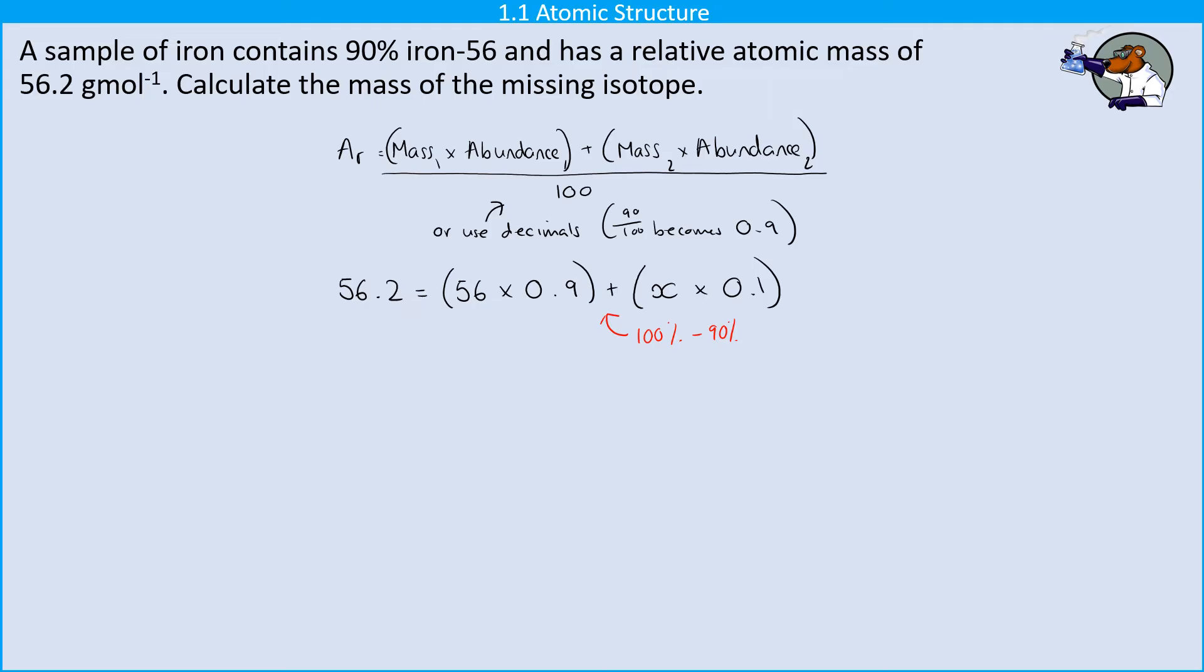All of my different abundances have to add up to be a hundred percent and in this instance it's quite a nice straightforward question I've only got two isotopes so I can just do a hundred take away that percentage or in this case one take away that decimal.